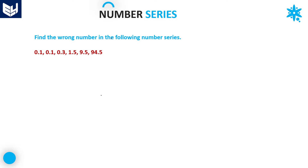Hi everyone, welcome back. In this session, I am going to be discussing about number series — specifically wrong number series. In wrong number series, a complete sequence of numbers is given, and one number in that sequence is the wrong number according to the series pattern. We have to identify which number is wrong — which is not following the same pattern as the remaining numbers. Let's go to the first problem in this session.